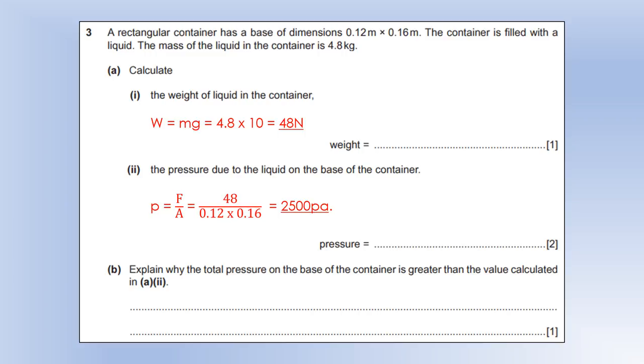Why would the total pressure on the base be greater than the value calculated? Well, this is the pressure due to just the liquid. There would also be the atmospheric pressure acting downwards, which would increase the overall pressure.